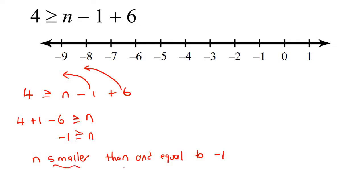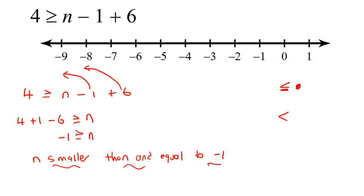So n is smaller than or equal to minus 1. We go to minus 1 on our number line, and we put either an open circle or a closed circle — and it's important which one we use. If the symbol has an equal sign under it, we use a circle that is completely closed. If it's just a less than or greater than symbol with no equal sign, we use an open circle. This applies whether the symbol faces left or right.